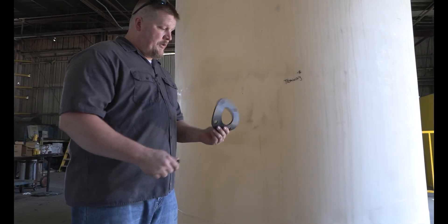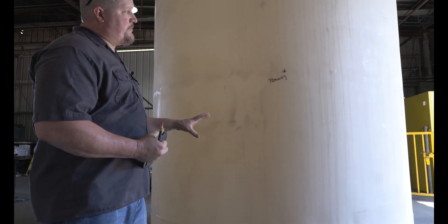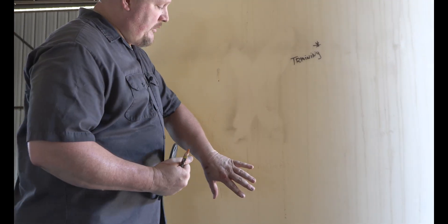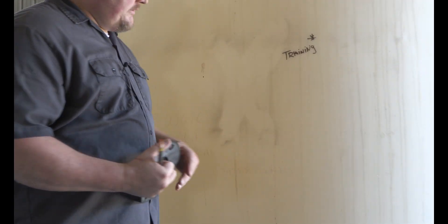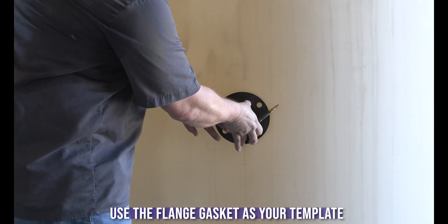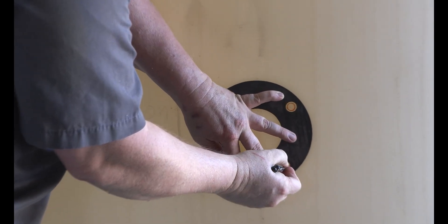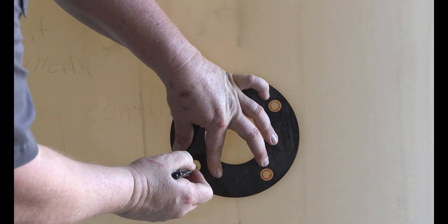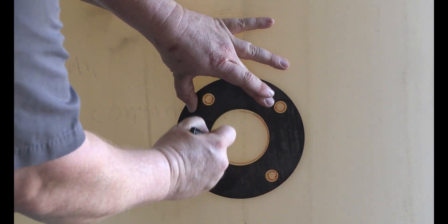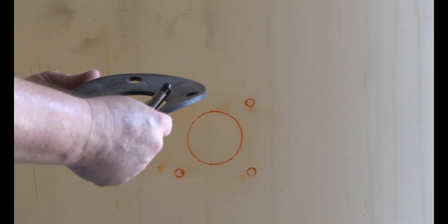First thing we want to do is take your gasket and take either a grease pen or a sharpie to determine the location where the fitting is supposed to be. If the customer knows that, they can give you that indication. For training purposes, we're going to put it right here. I would lay the gasket out, make sure it's level, and then mark your bolt holes and your center hole.